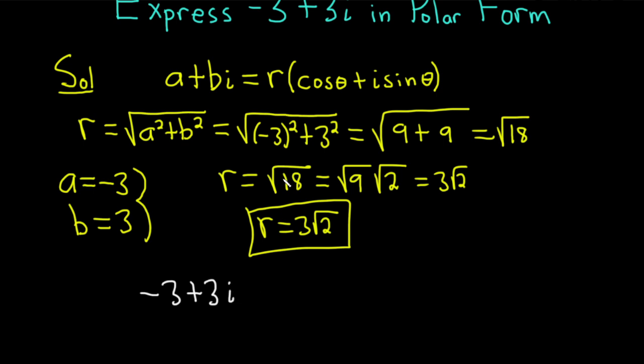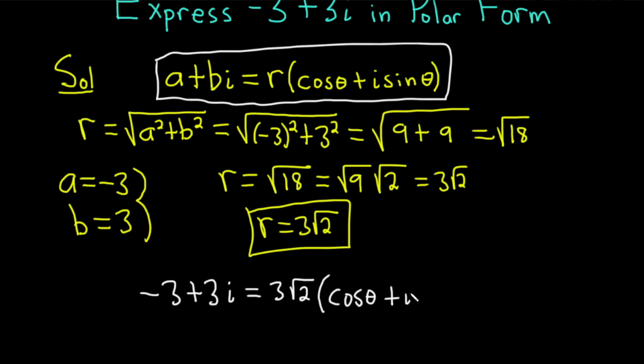And then you set it equal to r, which is 3 root 2. I'm just using the formula up here. a plus bi equals r times cosine theta plus i sine theta.